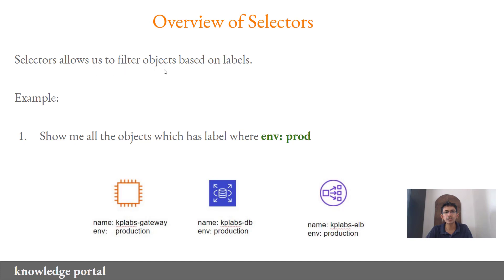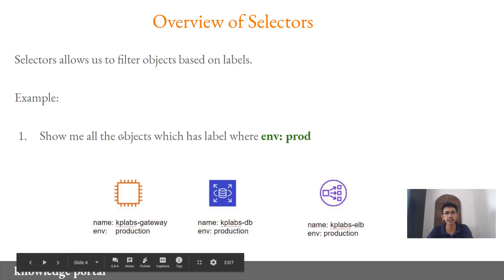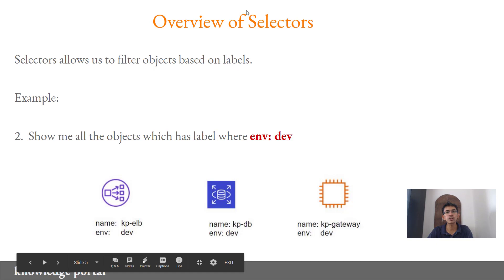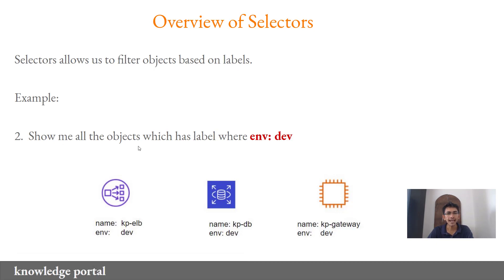Now the next important part is selectors. Selectors basically allow us to filter objects based on labels. Generally in Kubernetes whenever you use labels, you will be using selectors as well in a lot of occurrences. For example: 'show me all the objects which have a label where env equals prod' — you will see all the resources with the environment as production. Similarly, 'show me all the objects where environment equals dev' — it will show you all the resources where the environment is dev. Through selectors you can filter resources based on labels.